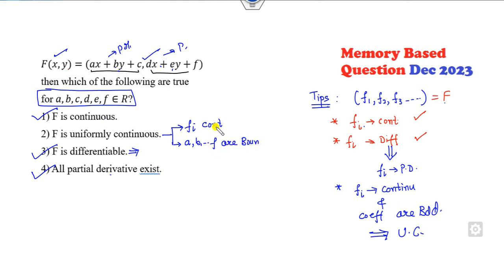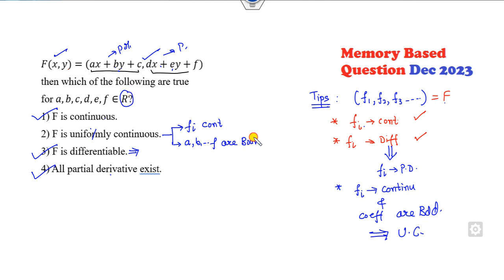In the last lecture, if this bounded condition was not given, then a, b, c, d may or may not be bounded, and in that case this option is cancelled. But right now it is given that they are on the real line, so yes they are bounded. If they are bounded, all four options are correct. Remember: if this condition is not given to you, then the option B is not correct.